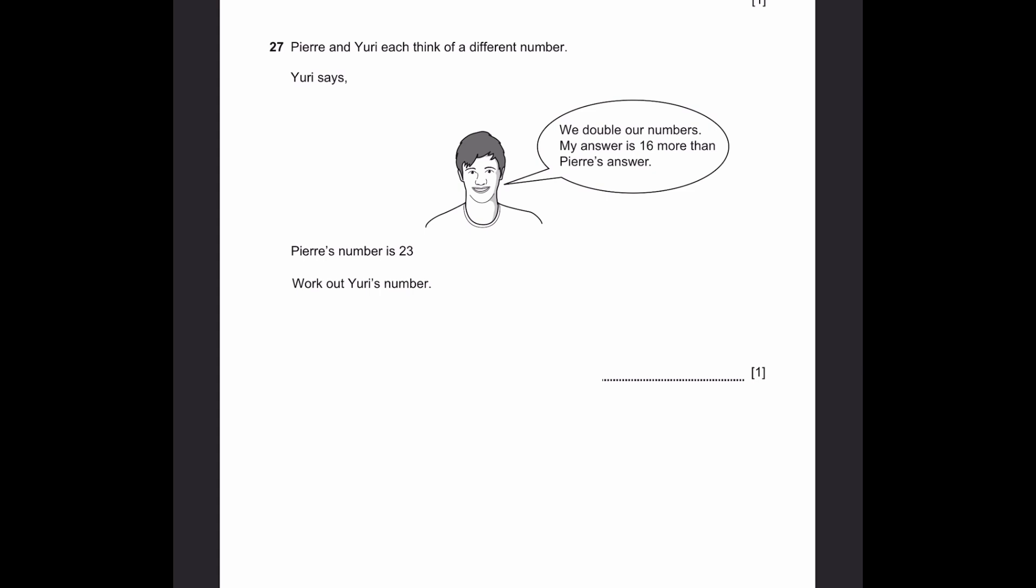Question 27. Pierre and Yudi think of a different number each. Yudi says, we double our numbers. My answer is 16 more than Pierre's number. Pierre's number is 23. Work out Yudi's number. So let's take Yudi's number as x. So 23 into 2, add 16. That'll be Yudi's number x into 2. This is x, by the way. Now, that means 23 into 2, 46. 46 plus 16 is 62. So 62 is equal to 2x, 2 into x. x is equal to 31. That's the answer.